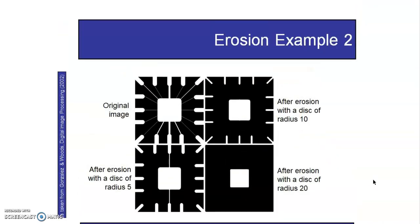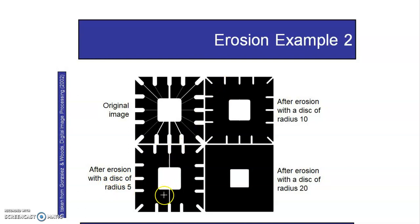Another erosion example uses a disk-shaped structuring element. A disk of radius 10 means roughly a 20×20 structuring element — applying this removes finer features significantly. With radius 5 the result is less thin and features are still present, but with radius 20 even more is removed. This is because a larger structuring element has more on pixels that must all match the image's on pixels.